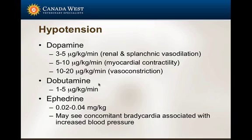Dobutamine is similar to dopamine in that it increases myocardial contractility, but it also decreases systemic vascular resistance — so it increases cardiac output but doesn't increase blood pressure. That's why we don't use it much in dogs and cats. We use it in horses. Dopamine's main goal is to increase contractility, stroke volume, and therefore blood pressure. At low doses you may see vasodilation and even hypotension; at very high doses it causes vasoconstriction. We usually start at 5 to 7 micrograms per kilo per minute and adjust, as there's significant individual variability.